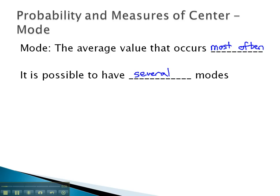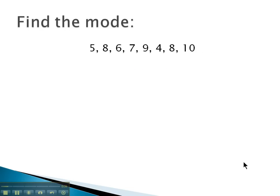Let's take a look at some examples where we're asked to find the mode. Here, we have a set of numbers. To find the mode, it's the value that occurs most often. You'll notice the number 8 appears twice. So we will say 8 is the mode of this data.